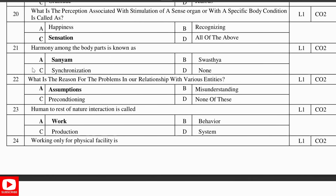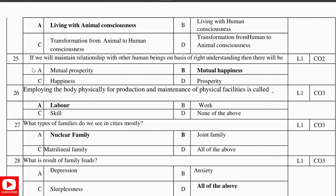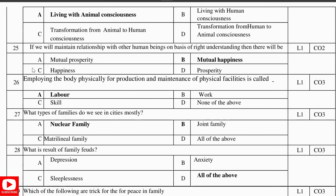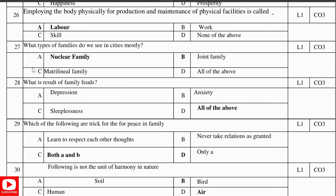Harmony among the body parts is known as health. What is the reason for the problems in our relationship with various entities? Answer: Assumption. Human-to-rest-of-nature interaction is called work. Working only for physical facility is living with animal consciousness. We will maintain relationship with other human beings on the basis of right understanding — then there is mutual happiness. Employing the body physically for the production and maintenance of physical facility is called labor. What type of families do we see in the cities? Answer: Nuclear family.